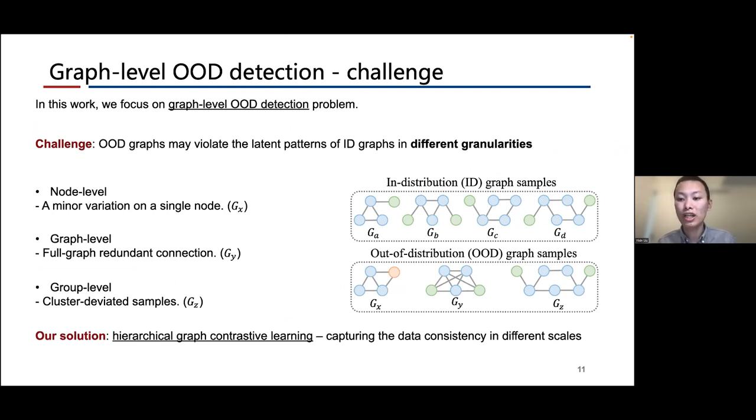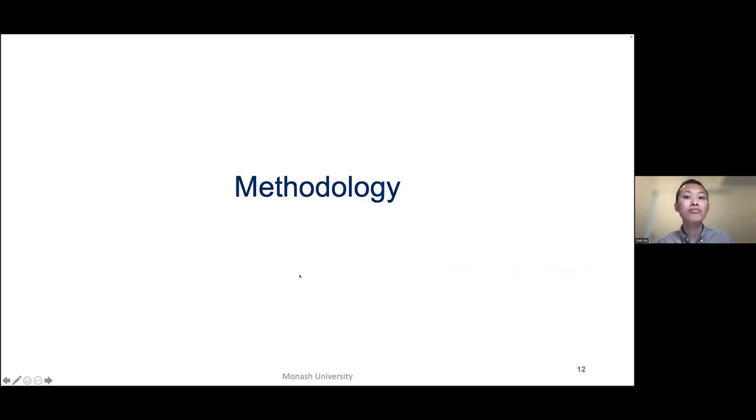There are many OOD detection works for image or text data in recent years. However, for graph data, there is a unique challenge: the OOD graphs may violate the latent pattern of ID graphs in different scales. For instance, here we have a series of ID graphs. The OOD sample Gs violates the node-level rule with a minor variation on a single node. Gui violates the graph-level rule where the full graph has redundant connections. Gz violates the group-level rule if we cluster the OOD samples considering the ID distribution. The challenge is how to capture the shared pattern at different levels. We consider a hierarchical graph contrastive learning method to address this challenge.